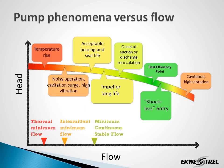The problem with an oversized pump is it will operate at reduced flows where various undesirable phenomena may occur. For example, here we have the best efficiency point area, and as we reduce flow, we get into suction recirculation, discharge recirculation, cavitation issues affecting the impeller life, increased vibration affecting the bearing and seal life, and as we reduce even further, instability and temperature rise issues can happen.